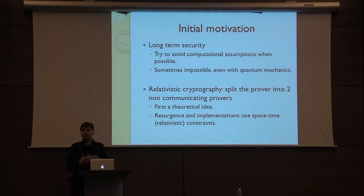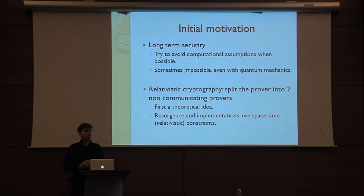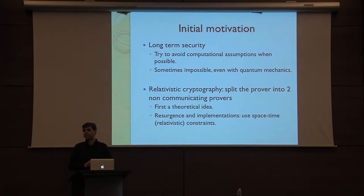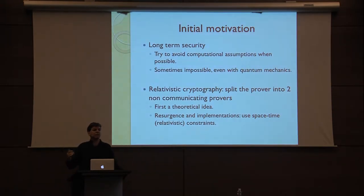And there was a recent resurgence of this area, and people thought, because it was thought to be something theoretical, can we actually create physical conditions in order to make sure that two provers cannot communicate? And the main idea is to use the relativistic constraint — more simply, if the provers are far apart, then information has to take some time to travel from one prover to the other, with a speed limit of the speed of light.